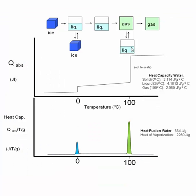Remember, we looked at phase changes in water — how ice can be converted to liquid water and then to gaseous water. As you raise the temperature, plotting heat absorbed on one axis, there's a steady increase until it hits zero degrees where the phase change occurs and temperature doesn't increase. Energy is absorbed to break hydrogen bonds. After it's completely liquid, the temperature continues to rise until the liquid-to-gas phase change. If we take the slope of these points and plot q over T versus temperature, we get these phase transitions for water going from solid to liquid and then from liquid to gas.